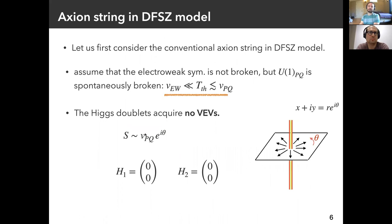Let us first consider the conventional axion string in the DFSZ model. We assume that the electroweak symmetry is not broken, but the U(1) Peccei-Quinn symmetry is spontaneously broken — namely, the temperature of the universe is much larger than the electroweak scale but less than the Peccei-Quinn scale. In this situation, the complex scalar S has a non-zero VEV but the Higgs doublets acquire no VEV. So the axion string consists of only this complex scalar S. This is the conventional axion string.